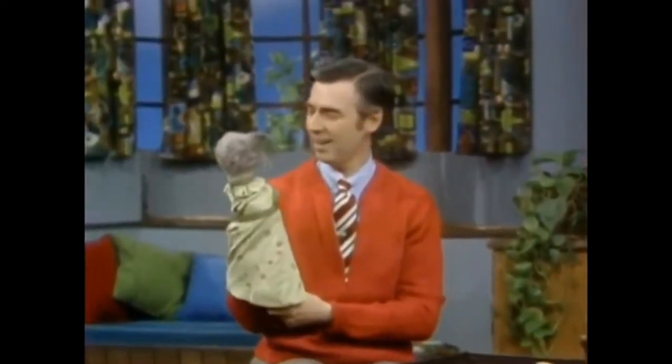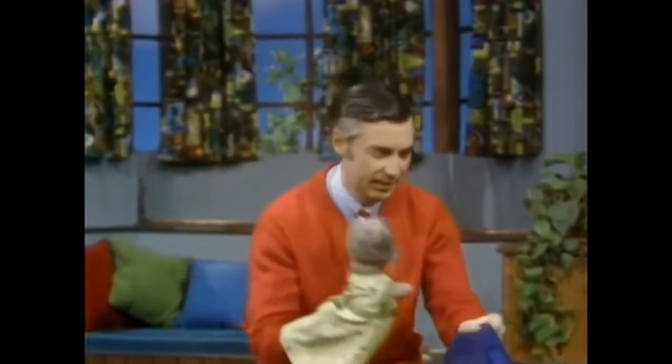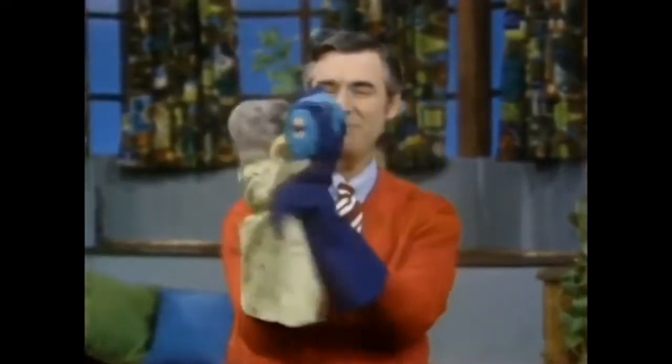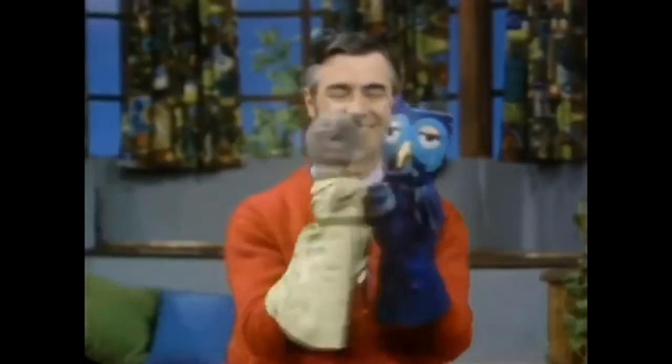Here's a puppet that lives in a little schoolhouse in a tree, Henrietta Pussycat. And here is an owl who is her neighbor. My name is X the owl. Hello Henrietta. There are two of the puppets.